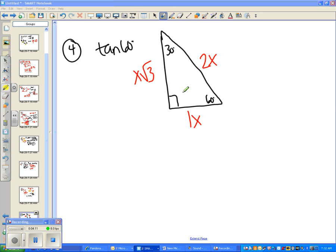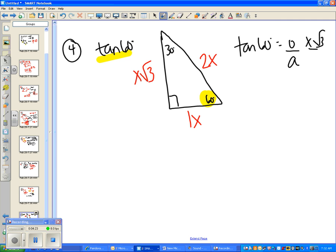So once you have that drawn, 60 degrees is here. Tan stands for TOA, so tan of 60 degrees equals opposite over adjacent. So the opposite side would be x radical 3, the adjacent side would be 1x. The x cancels out, and you're left with just radical 3 over 1. So that was the answer.